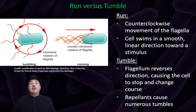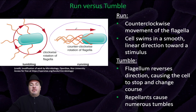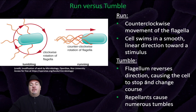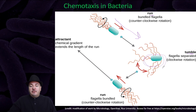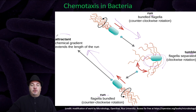During a run, there's a counterclockwise movement of the flagella, which allows a cell to swim in a smooth linear direction towards the stimulus. Or you can have a tumble, where the flagellum reverses direction, causing the cell to stop and change course. Repellents often cause numerous tumbles. For example, during a run the flagella move counterclockwise and the cell moves in a straight direction; then during a tumble the flagella move clockwise and the cell changes direction; then they enter another run, moving counterclockwise towards a chemical attractant such as glucose.